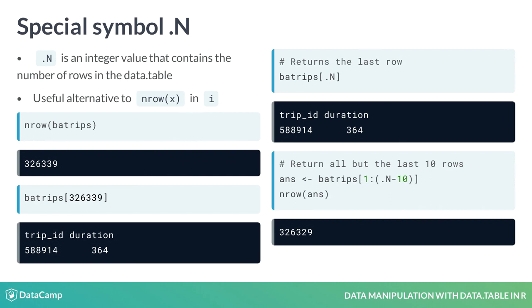To get the last row for example you can simply do batrips[.N]. Similarly to get all but the last 10 rows you can specify the i argument as 1:.N-10. Since .N is the total number of rows you're essentially creating a continuous sequence of integers from 1 to the required row number.